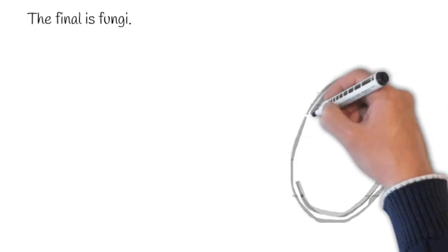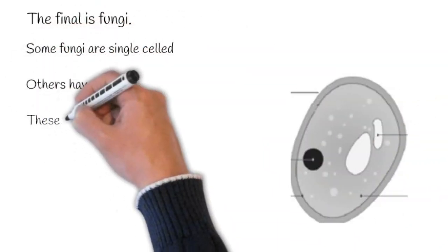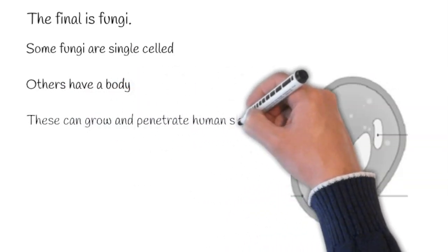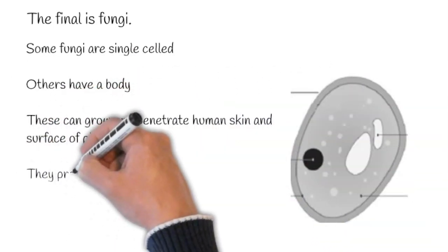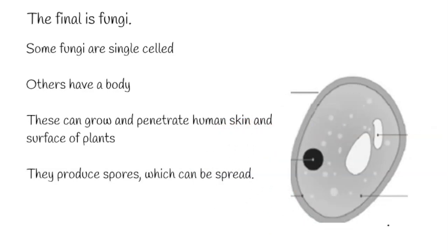The final is fungi. Some fungi are single celled. Others have a body. These can grow and penetrate human skin and the surface of plants. They produce spores which can be spread.